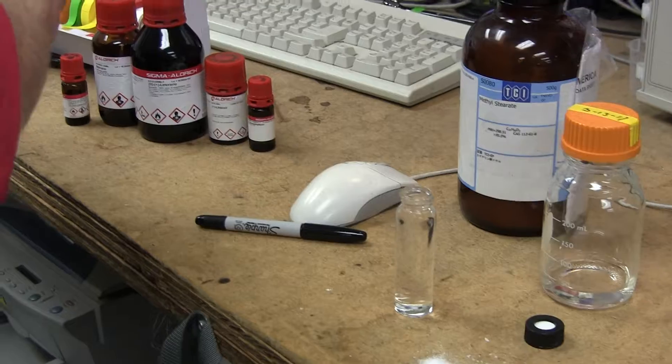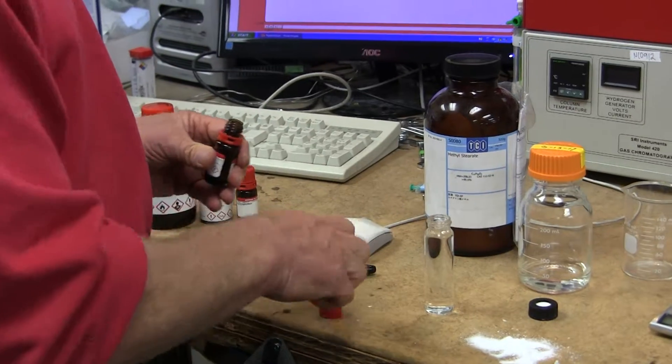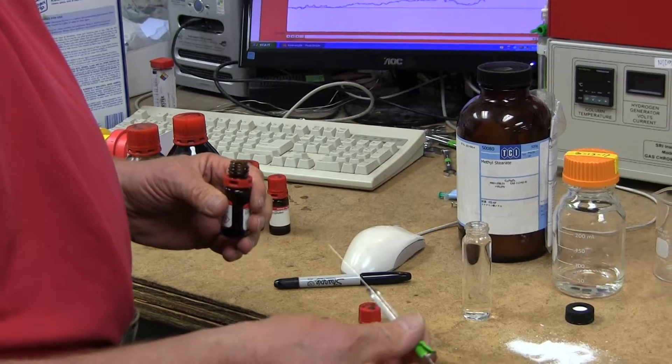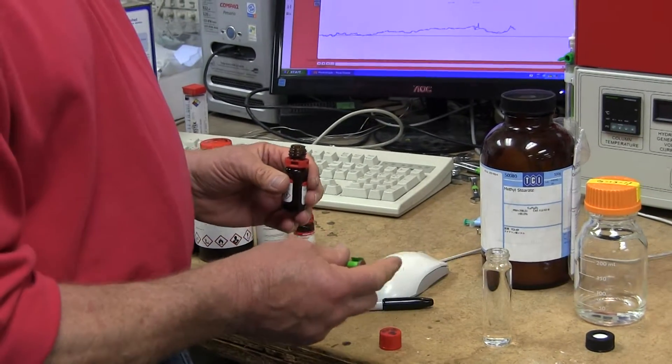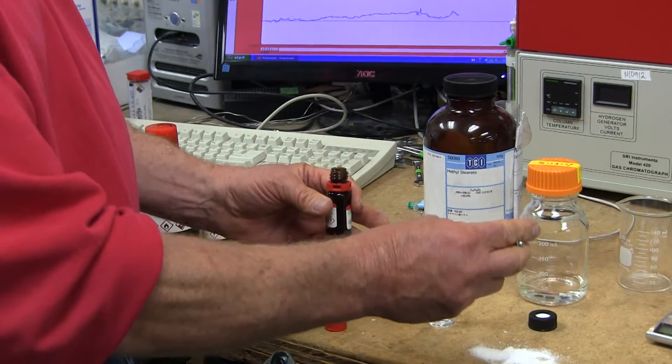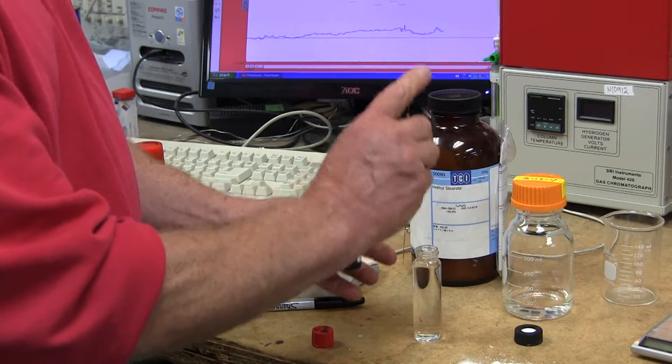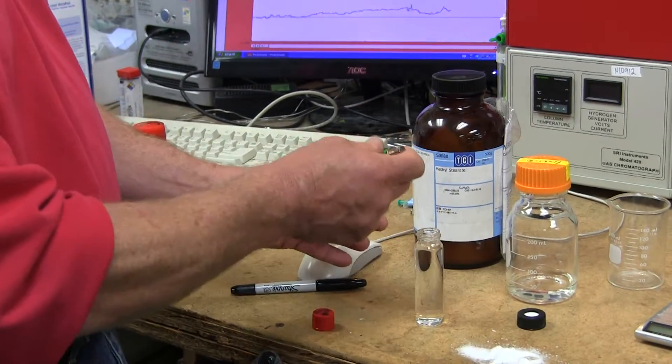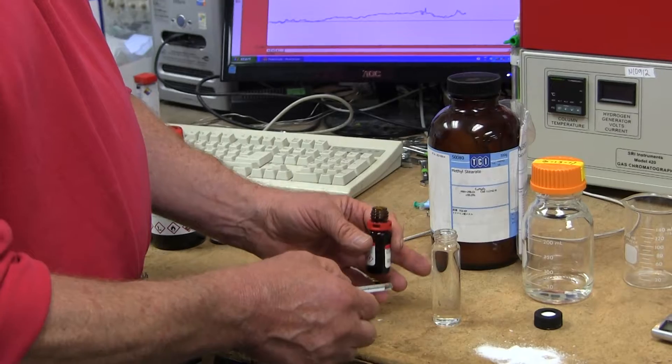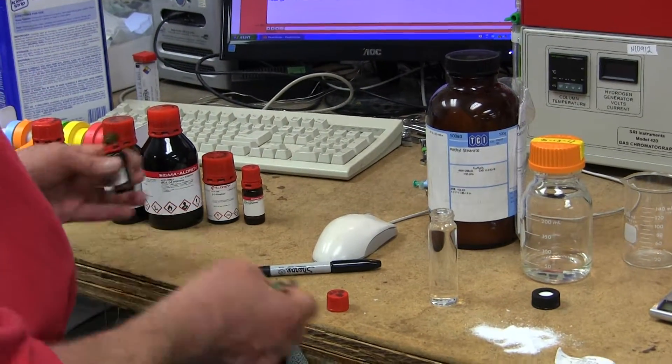Alpha pinene weighs about 0.8 times as much as water does, so four microliters weighs about 3.2 milligrams since a microliter of water weighs a milligram. When I put 4 microliters into 40,000 microliters, I'm dividing the pure alpha pinene by 10,000 times. So I know this particular internal standard solution now contains a known weight of alpha pinene.